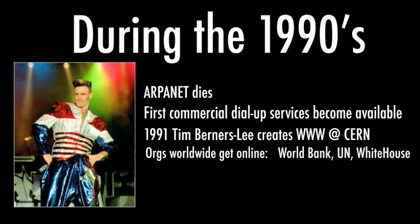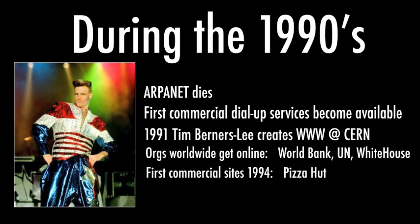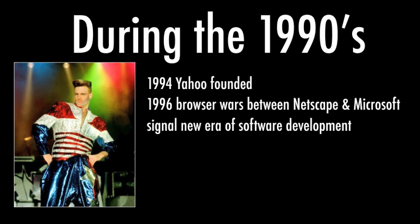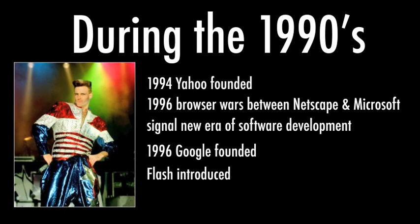Around 1993, major worldwide government organizations got online — the White House went online in 1993, which was a pretty enormous deal. The first commercial sites started popping up in 1994, and the very first commercial site was Pizza Hut. Yahoo was founded in 1994. In 1996, the browser wars erupted between Netscape and Microsoft, Google was founded, and Flash was introduced by Macromedia — later bought by Adobe — laying the groundwork for rich online development. By 1999, there were six and a half million sites online.